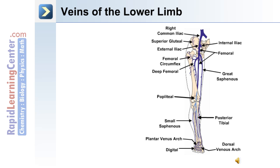The veins of the lower limb: the venous drainage begins with blood leaving the sole of the foot in the plantar veins. The anterior tibial, posterior tibial, and fibular veins are the deep veins of the lower leg. These veins drain into the popliteal vein and eventually into the femoral vein. The great saphenous vein is the longest vein in the body and is used during coronary bypass surgery. The tibial and fibular veins join together to form the popliteal vein. The femoral vein receives blood from the great saphenous vein, deep femoral vein, and femoral circumflex vein, then drains the blood from the lower limb and delivers it to the external iliac vein in the pelvis.